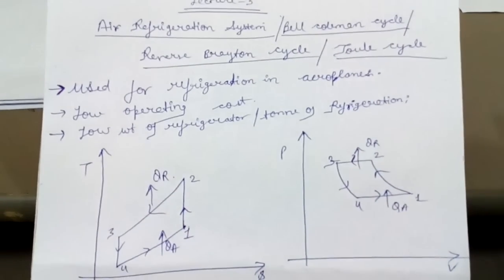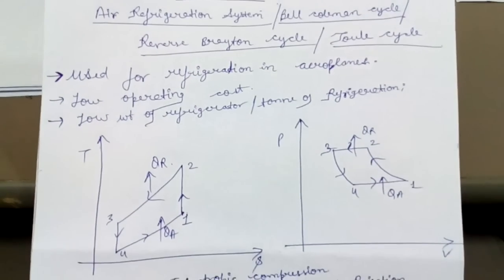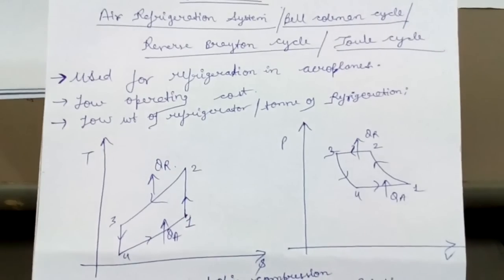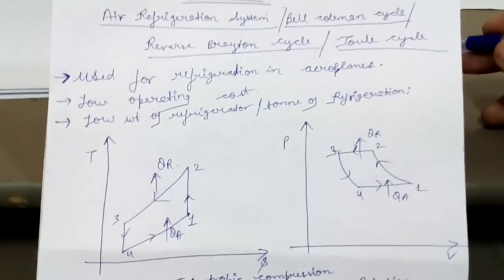Here I have taken the topic air refrigeration cycle which is also called Bell-Coleman cycle or reverse Brayton cycle or Joule cycle.